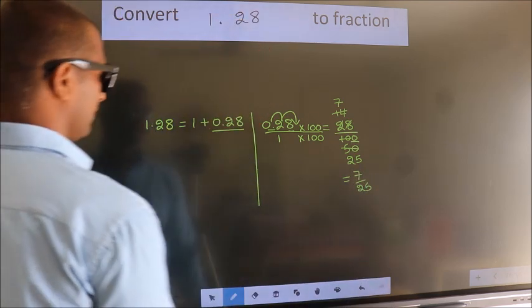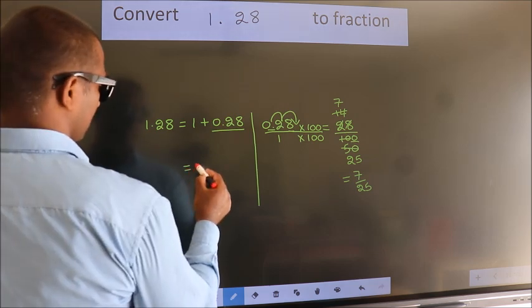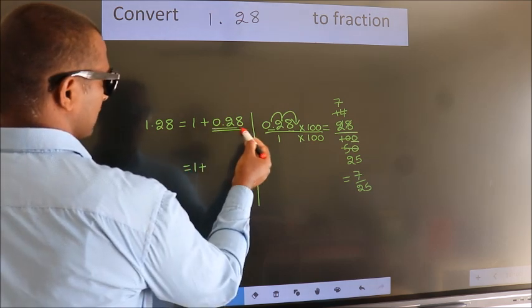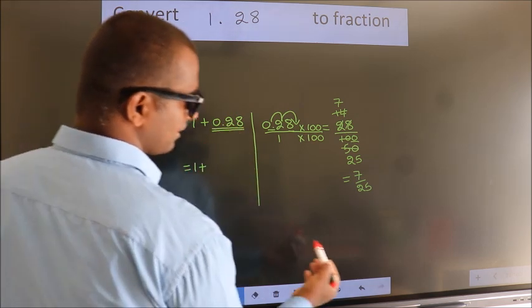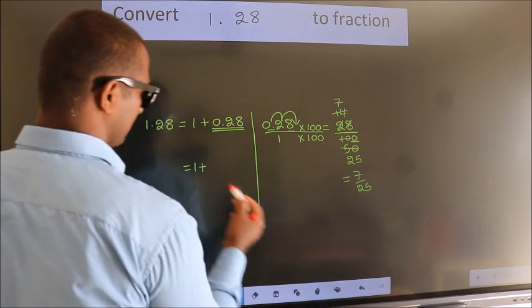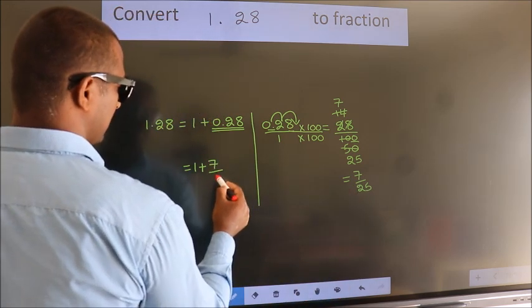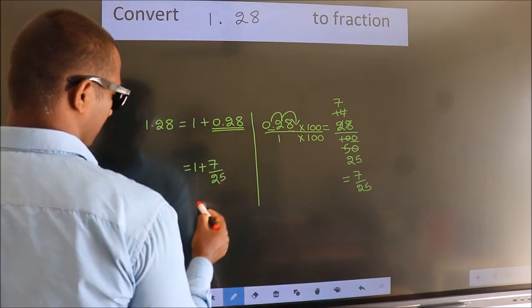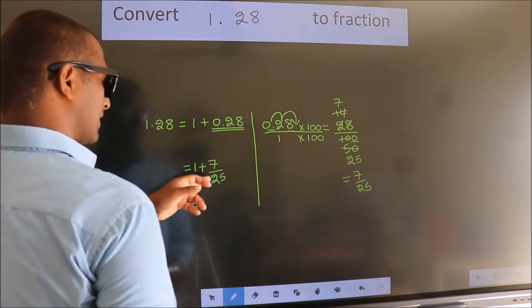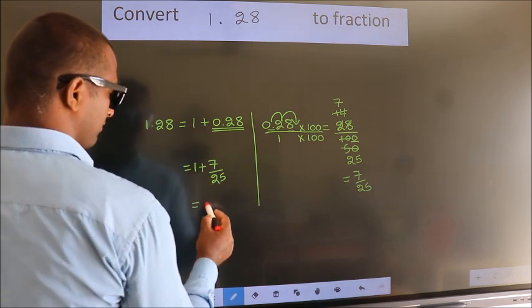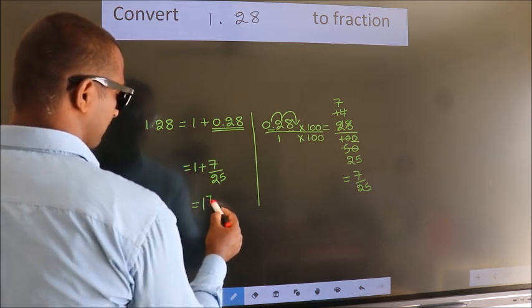Now here, 1 plus in place of 0.28, I write this fraction: 7 by 25. So 1 plus 7 by 25 in mixed fraction is 1 and 7 by 25.